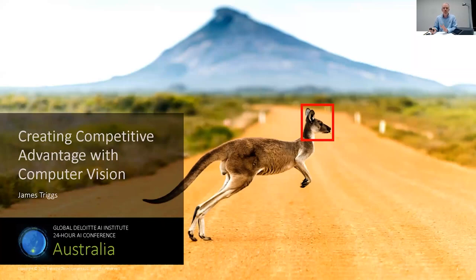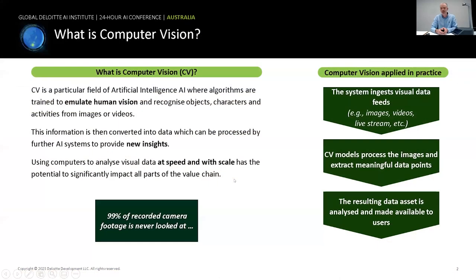We've got quite a broad audience of people on the call, so I wanted to start with a little bit of background on what computer vision is. The things we do with our eyes as humans is now things that computer vision can do. As humans, we can look at a picture or video, we can recognize objects in that video, we can read words and text, we can see things moving and track where things are moving across images and videos. All those things we can do with our eyes is now possible to do with computer vision.